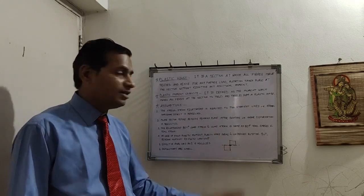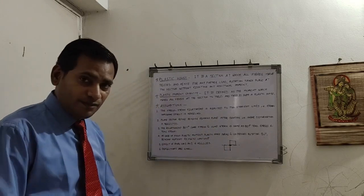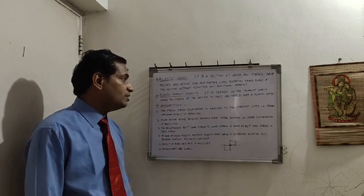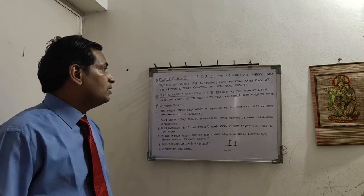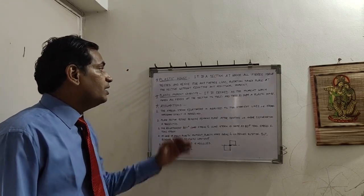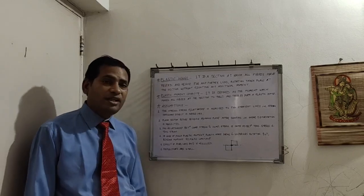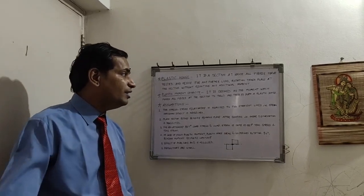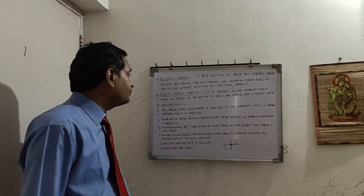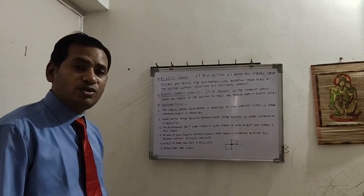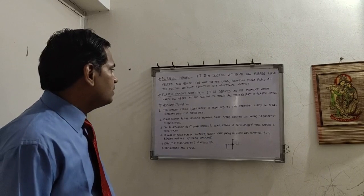Next is plastic moment capacity. Plastic moment capacity is defined as the moment which makes all the fibers at the section yield and thereby form a plastic hinge. Based on the previous session, these are the two key outcomes.